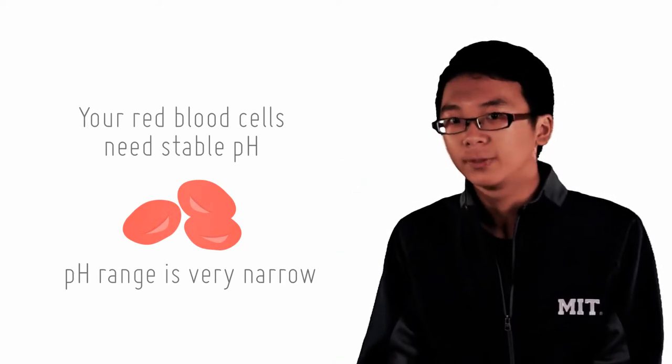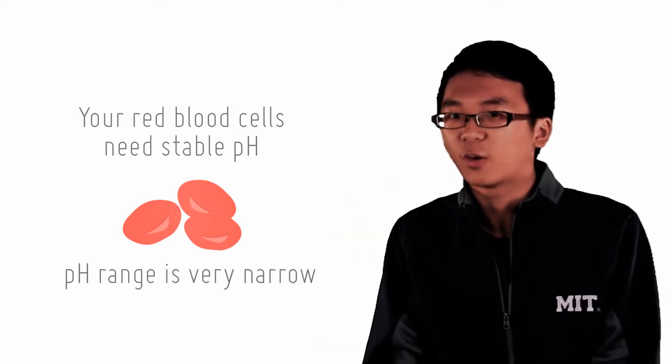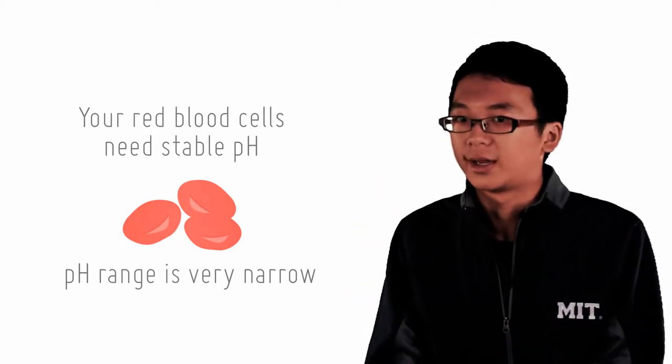As in the previous checkpoint, you saw how the lack of buffers can lead to disastrous changes in pH by the introduction of just small amounts of acid. But thankfully, your blood has its own natural buffering mechanism.